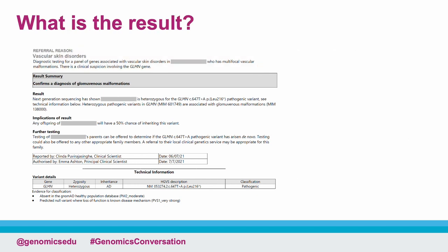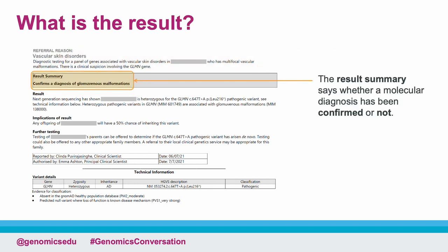Next, you'll find the result summary. The summary is the take-home message of the report and is clearly written in bold font. In this example, we can see that a molecular diagnosis of glomuvenous malformation has been confirmed for the patient.